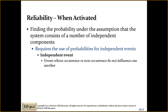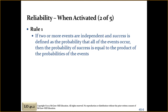Independent events have no relation to the occurrence or non-occurrence of each other — they don't influence each other. So if one thing is operating, it doesn't depend on another thing to help it operate; it's independent. We're going to get into three rules that we'll discuss.